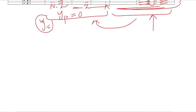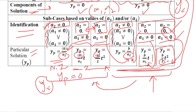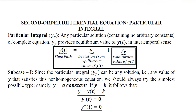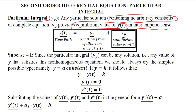In this video we have compared the various cases of the particular integral of a second order differential equation, as you can see in the highlighted components. Now we are going to derive these formulas that we saw in that table. The particular integral is the equilibrium condition of the time path, and it is intertemporal, containing no arbitrary constants, which makes it a definite solution.